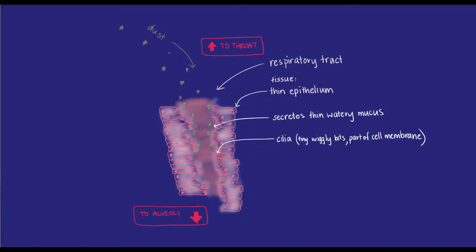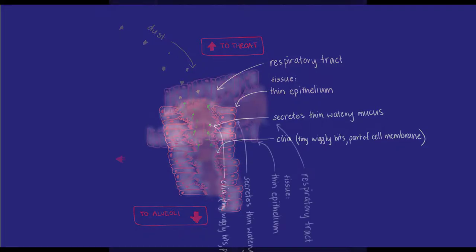That way it can be stopped, swallowed and removed by the digestive system. There are also cilia in the nasal cavity that move the mucus and trapped particles down, also toward the throat to be swallowed.